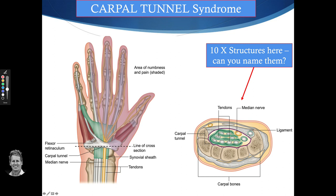This little structure here is the ulnar nerve, but it's outside the carpal tunnel. The ulnar nerve actually goes through another canal called the canal of Guyon.